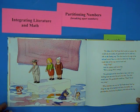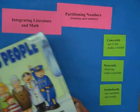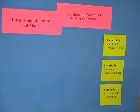When bath time was over, the tub people always lined up along the edge of the bathtub. The father, the mother, the grandmother, the doctor, the policeman, the child, and the dog. Okay, so that's going to put the framework of what we're going to do next.